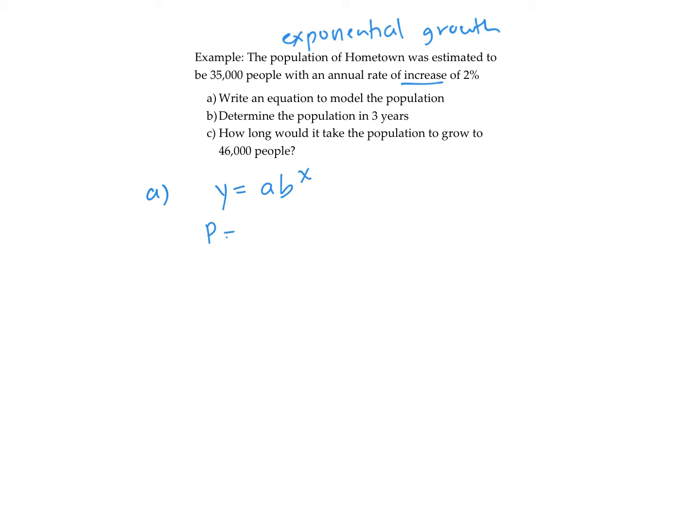What does y represent? Y represents the population, so I might put p—you could use letters that represent the situation. A is the starting population, which is 35,000. It's increasing at 2%, so we say it's 1 plus 0.02 as a decimal, times x number of times. We might use t for time. If we simplify, 1 plus 0.02 is 1.02 to the power of t.